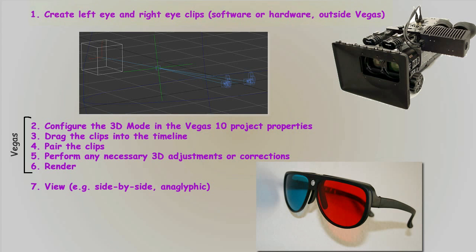The first thing you have to do to create 3D footage is to create left and right eye clips. This can be done in software or hardware, either way it's done outside Vegas. You could have a stereoscopic camera that would create two clips, one for the left eye, one for the right eye. You could have a rig that holds two cameras, or you could create your left and right eye clips in software.